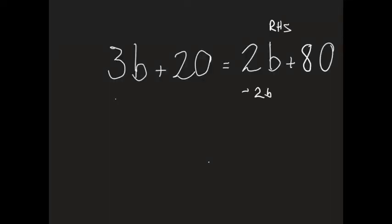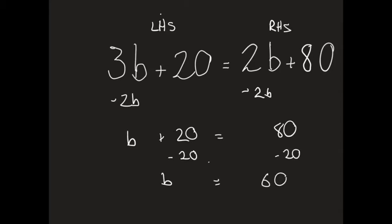3b plus 20 equals 2b plus 80. Subtract 2b from both sides of the equation. Always do things on both sides. 3b minus 2b is b. B plus 20 is equal to 80. Subtract 20 from both sides of the equation. B is equal to 60.